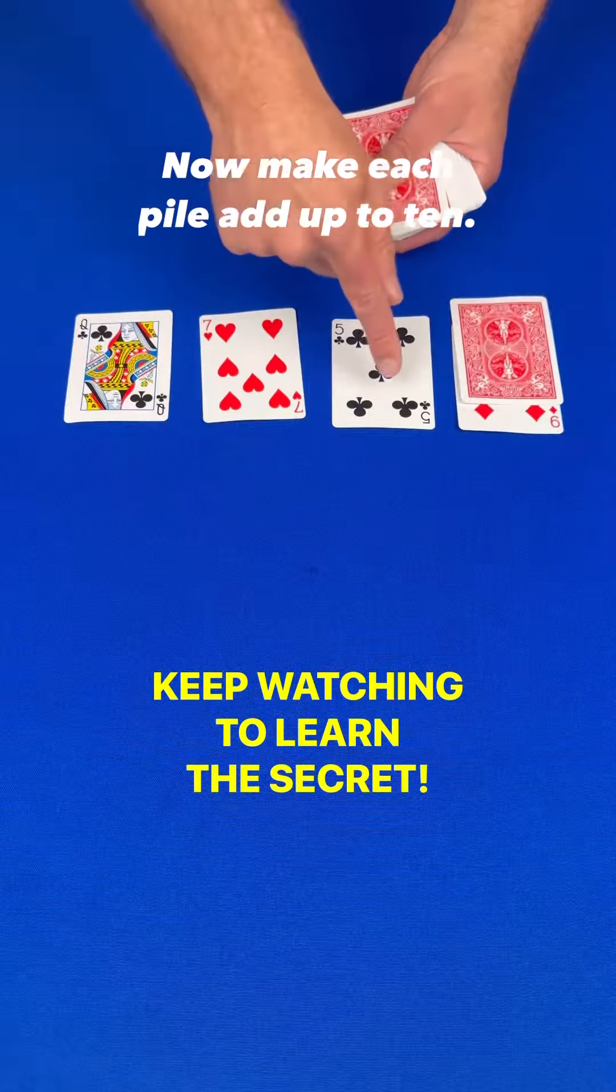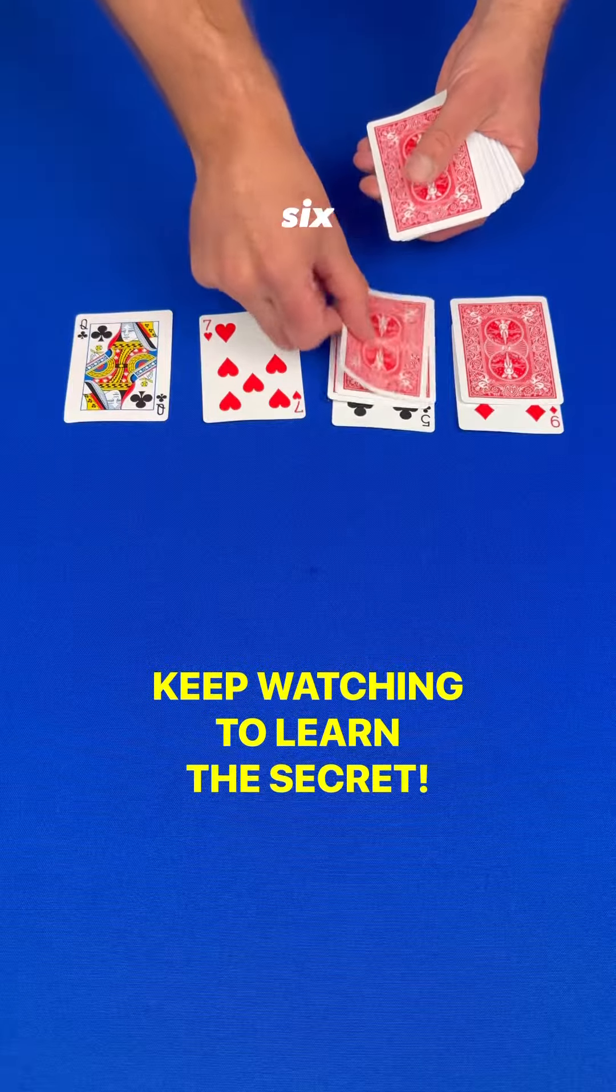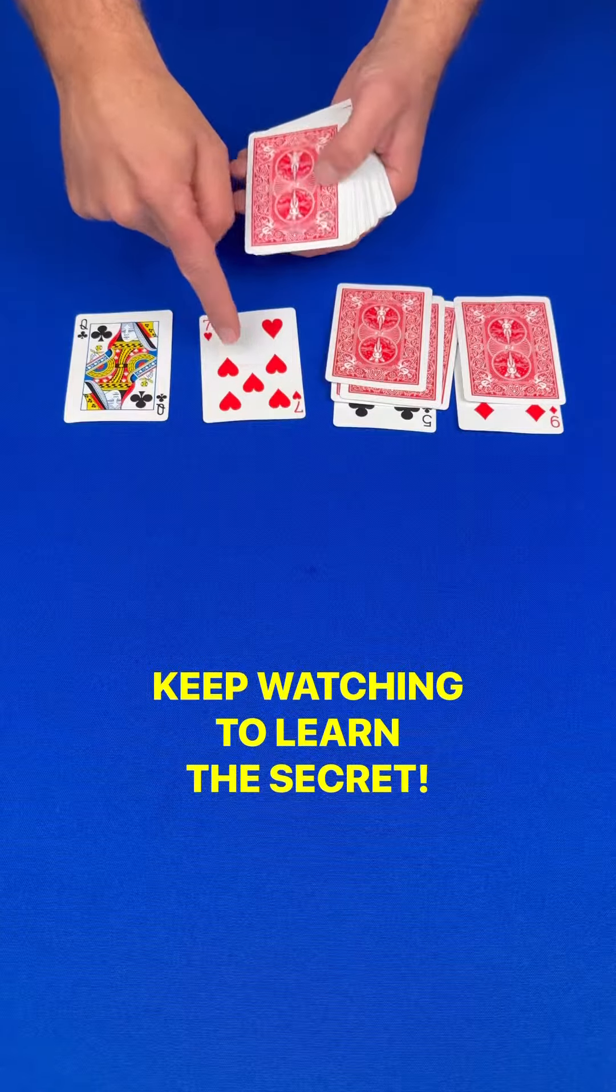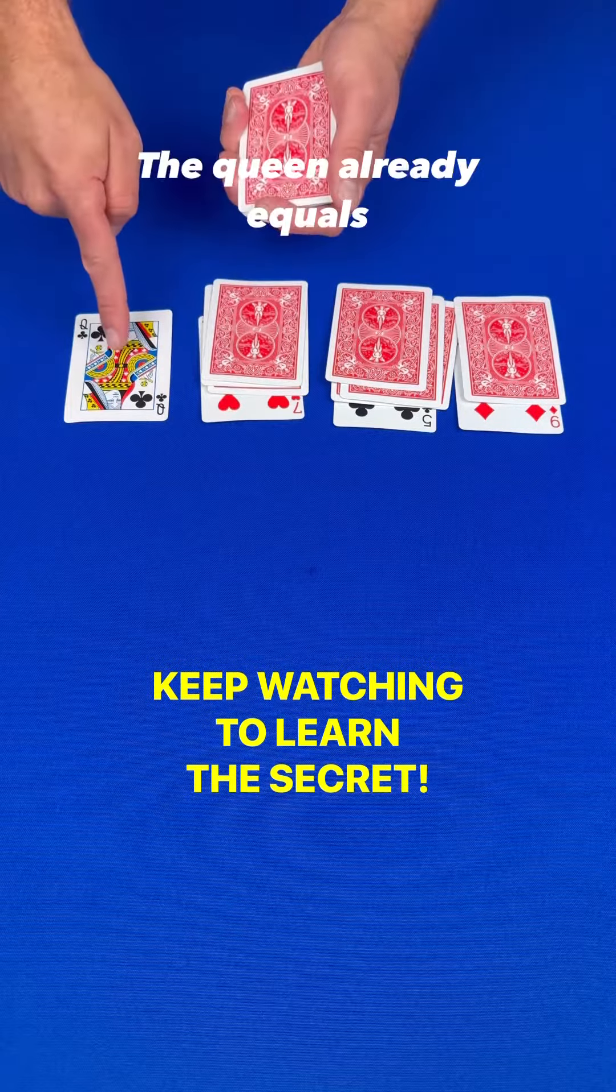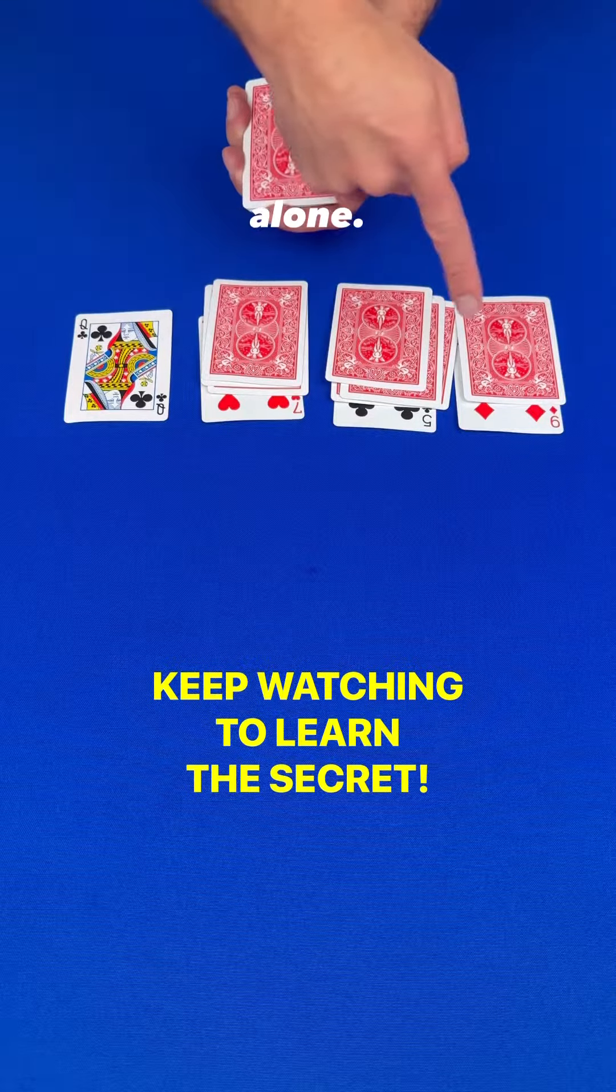Now make each pile add up to 10. 9 plus 1 is 10, 5, 6, 7, 8, 9, 10, and 7, 8, 9, and one more is 10. The Queen already equals 10, so we leave that alone.